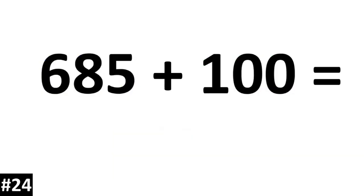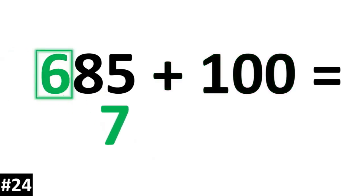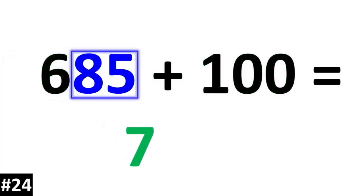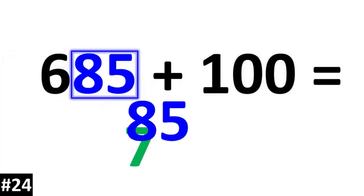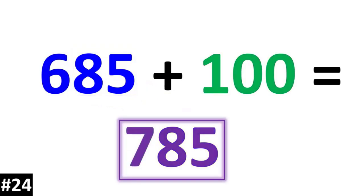685 plus 100. The hundreds digit of 6 is going to go up to 7. The other numbers stay the same, so 685 plus 100 is 785.